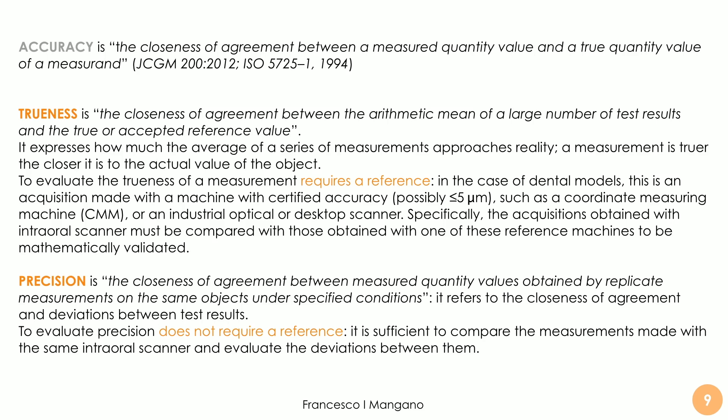Precision is the closeness of agreement between measured quantity values obtained by replicate measurements on the same objects under specified conditions. It's more about the closeness of agreement and deviation between test results. We don't need a reference in vivo to evaluate precision, because it is sufficient to compare different scans made on the same object under the same conditions at different times, and evaluate the deviations among them.